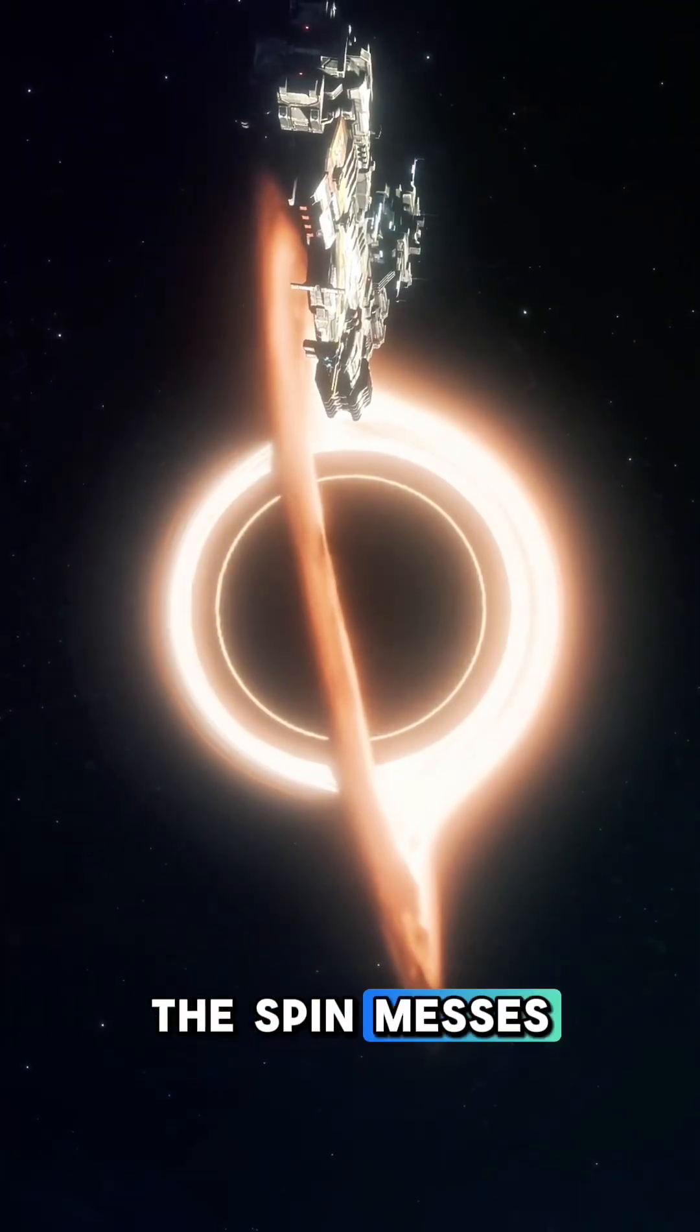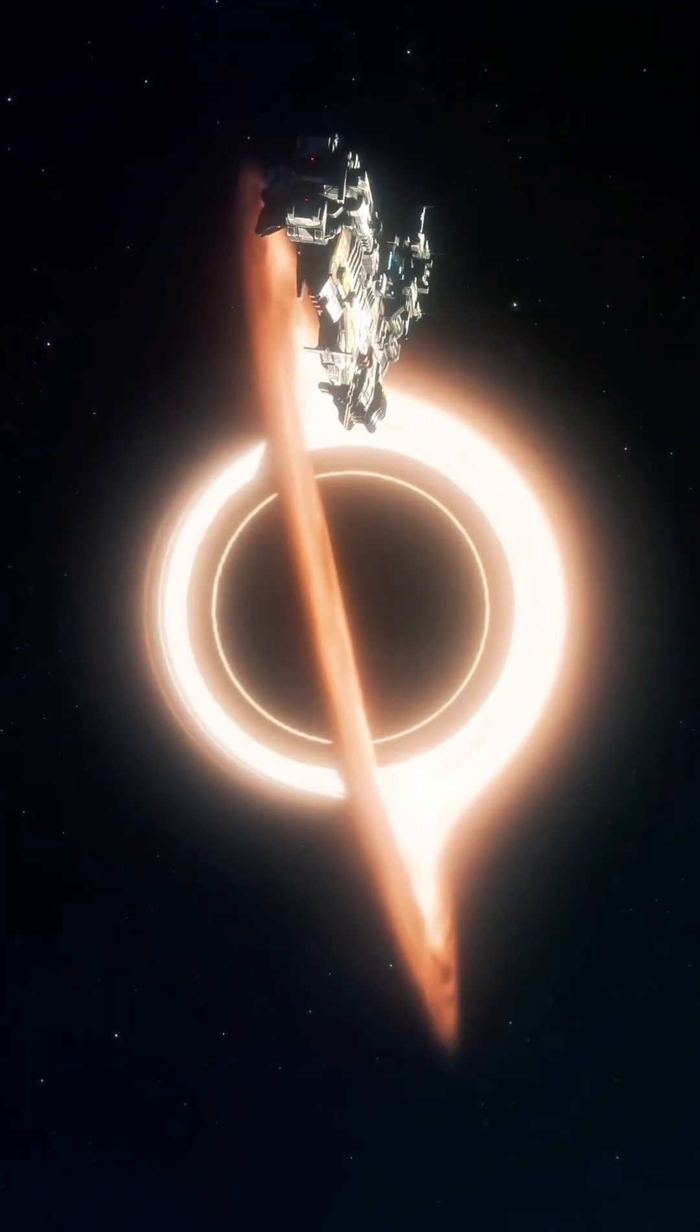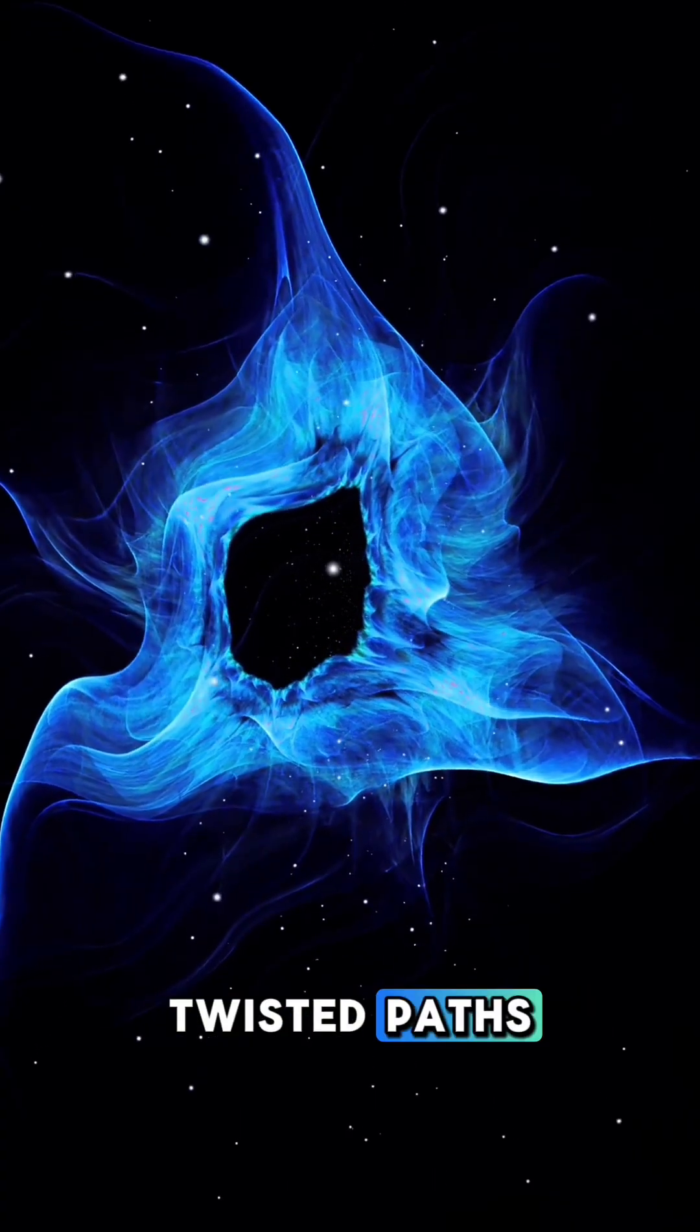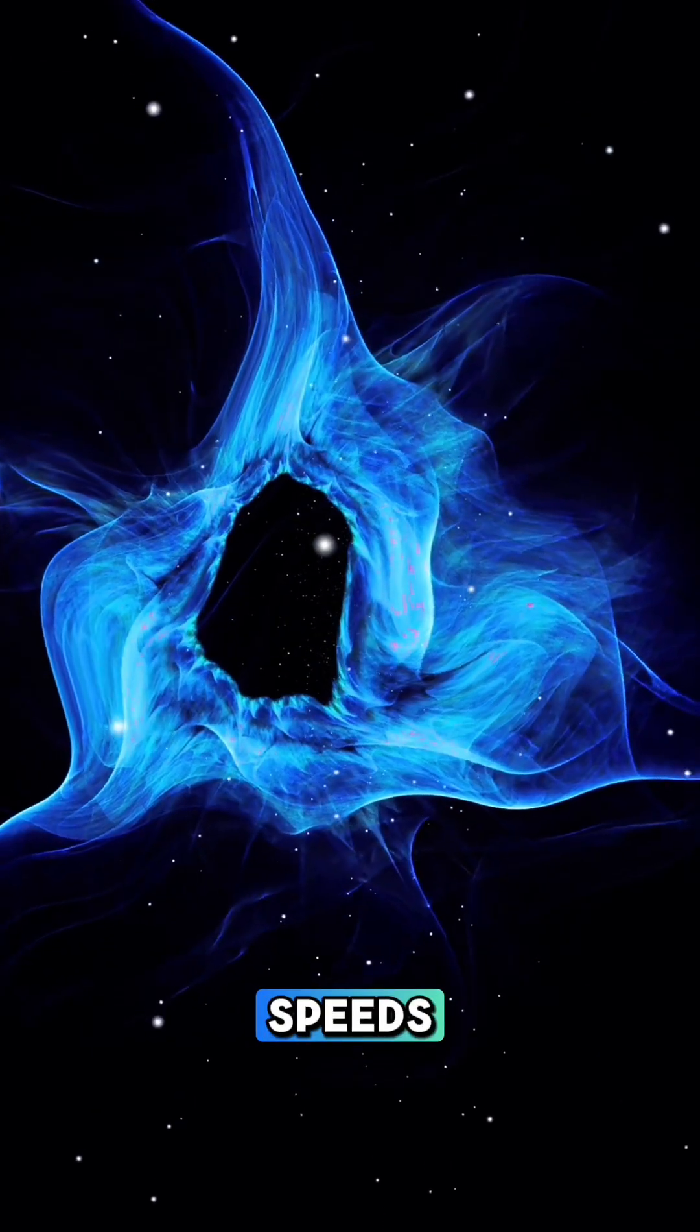And then you have warped orbits. The spin messes with how things orbit the black hole. Instead of nice flat orbits, it can spiral in tilted, twisted paths, sometimes even getting flung off at high speeds.